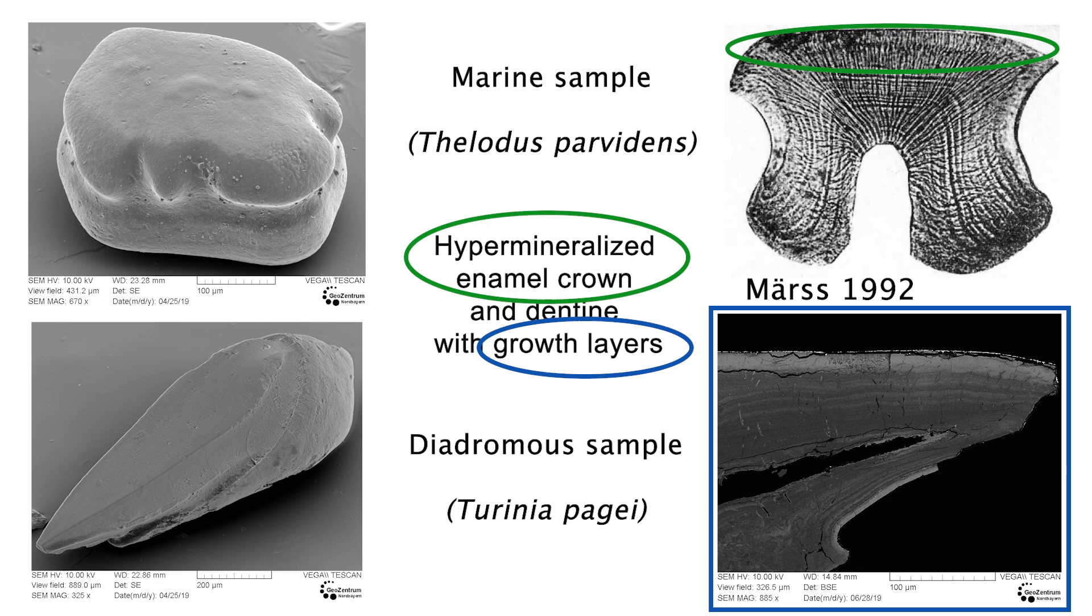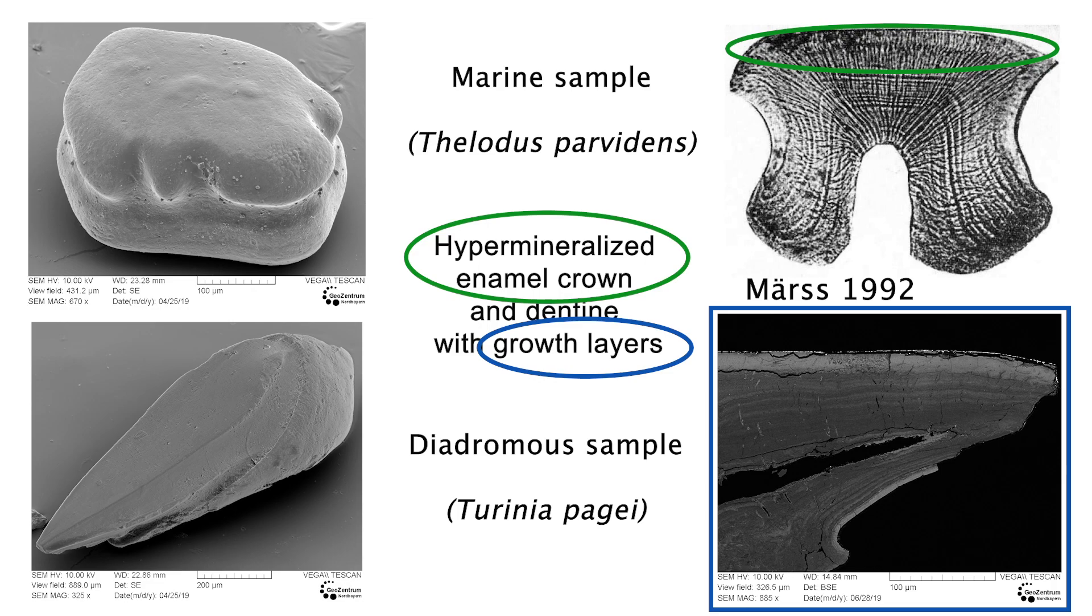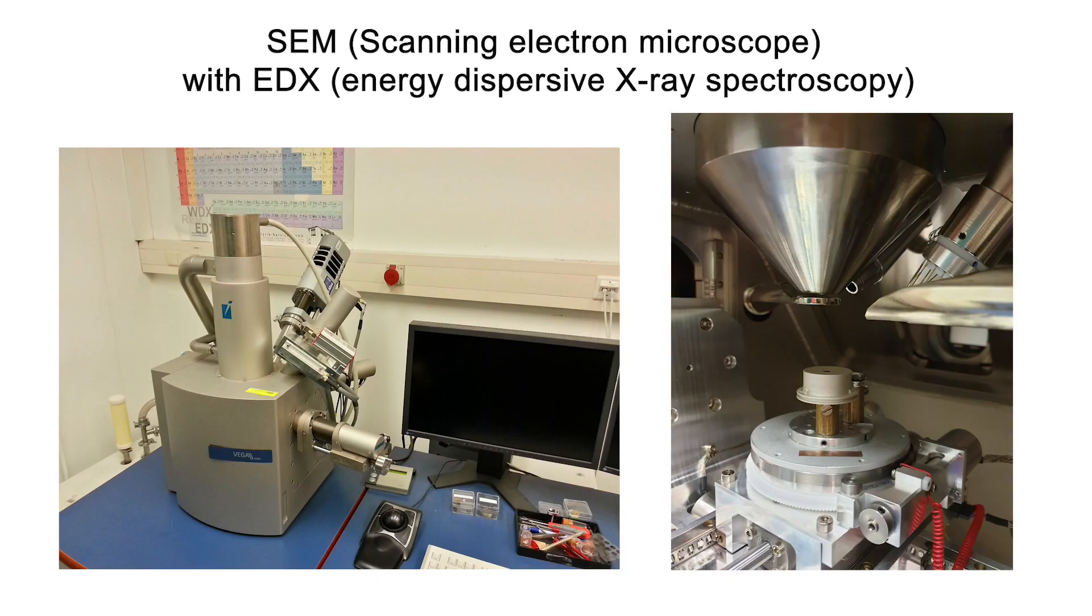After its deposition, the scale continues growing inwards by successively adding new layers of dentine, a calcified and quite porous type of tissue. Basically, thelodont scales grow like human teeth. Earlier growth is recorded towards the outside, later growth towards the inside of the scale.